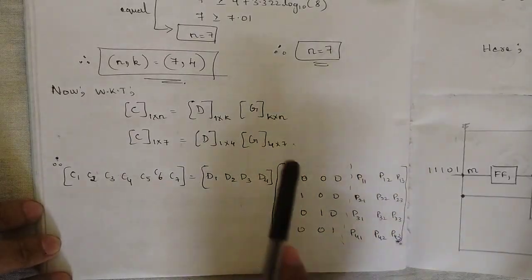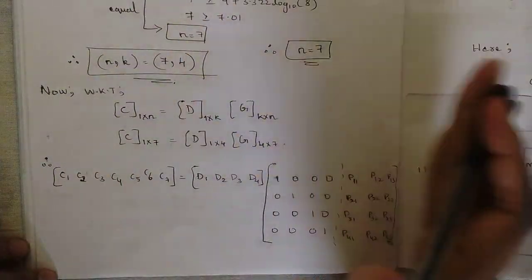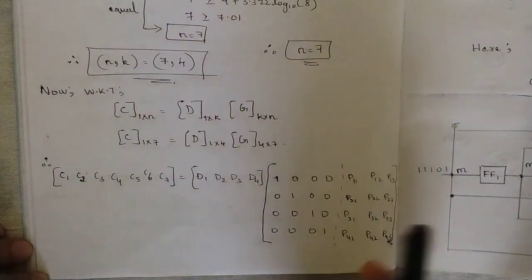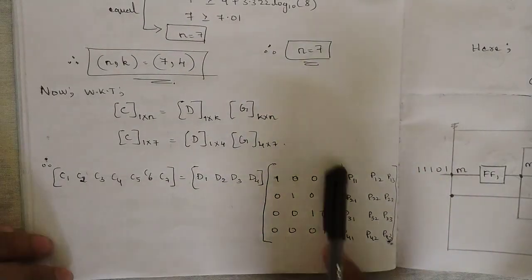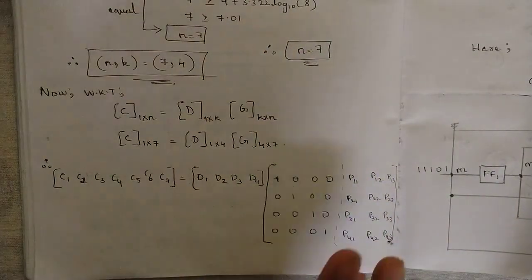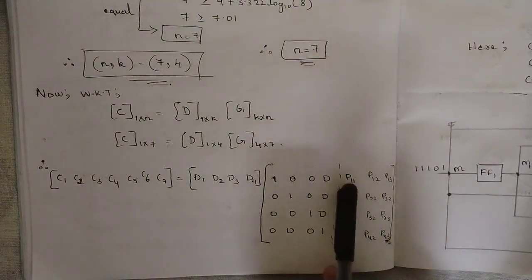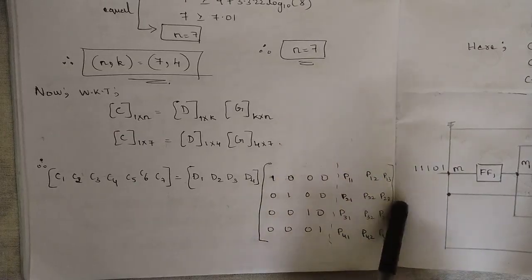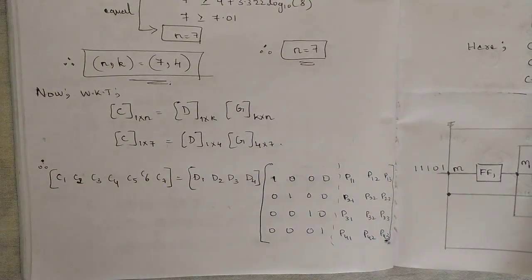The generator matrix G = [I | P], where the identity matrix is of order 4×4 and the parity matrix is of order 4×3. Since the parity matrix values are not specified in the question, we denote them as p11 p12 p13, p21 p22 p23, p31 p32 p33, p41 p42 p43. This completes the design of the linear block code.